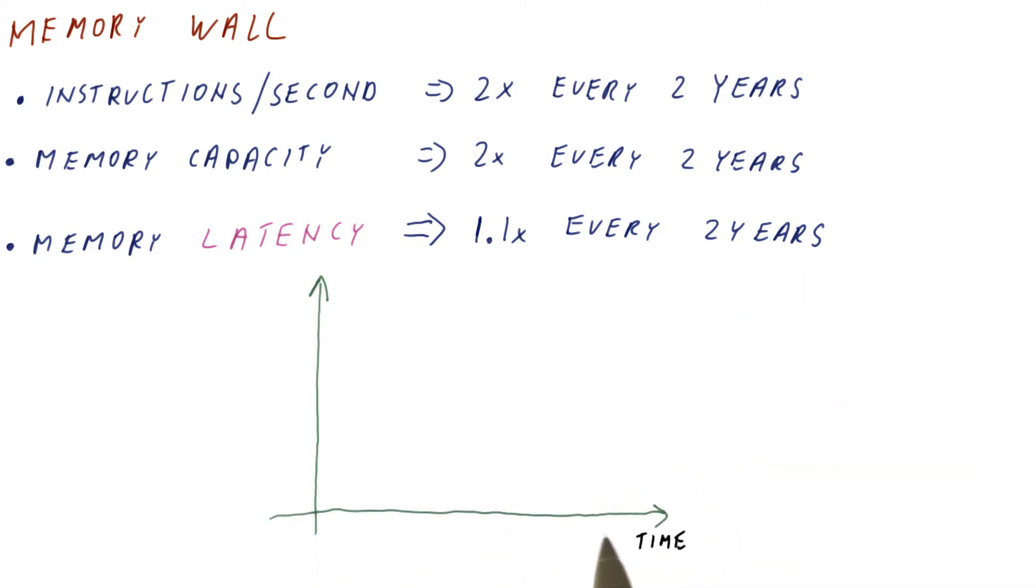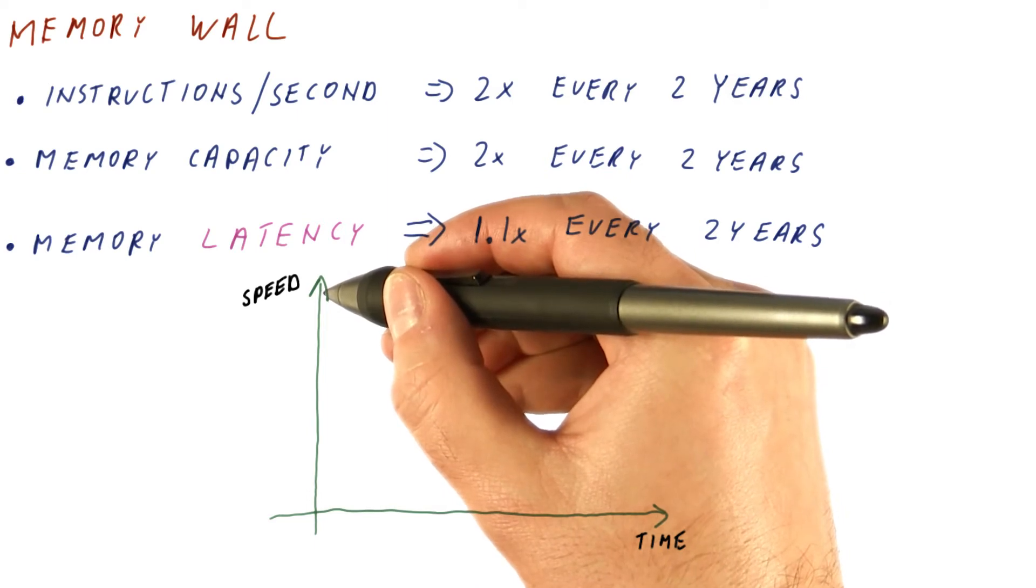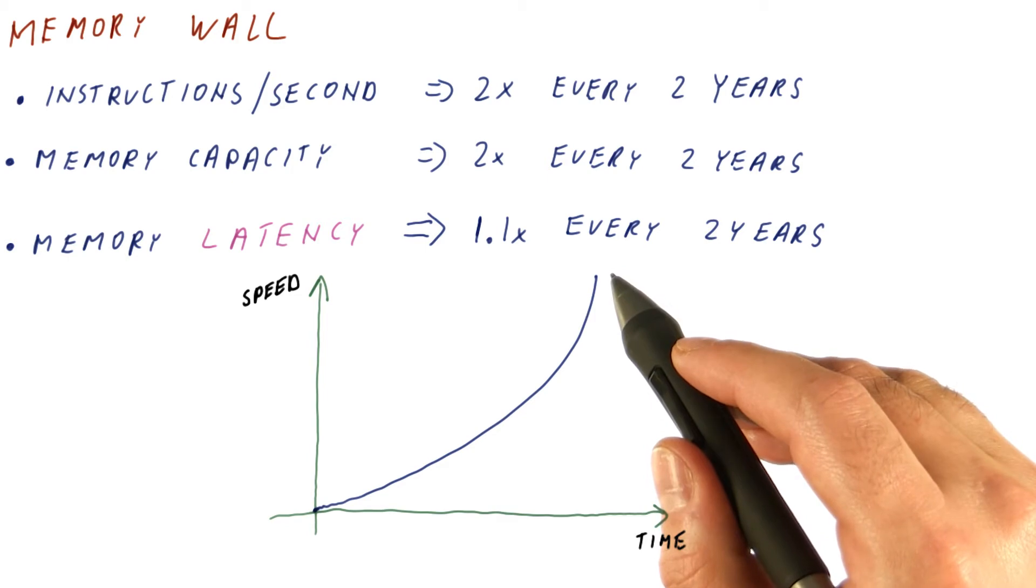So over time, as years go by, if we plot the speed of processors and memory, we get something like this, an exponential curve for the processors.